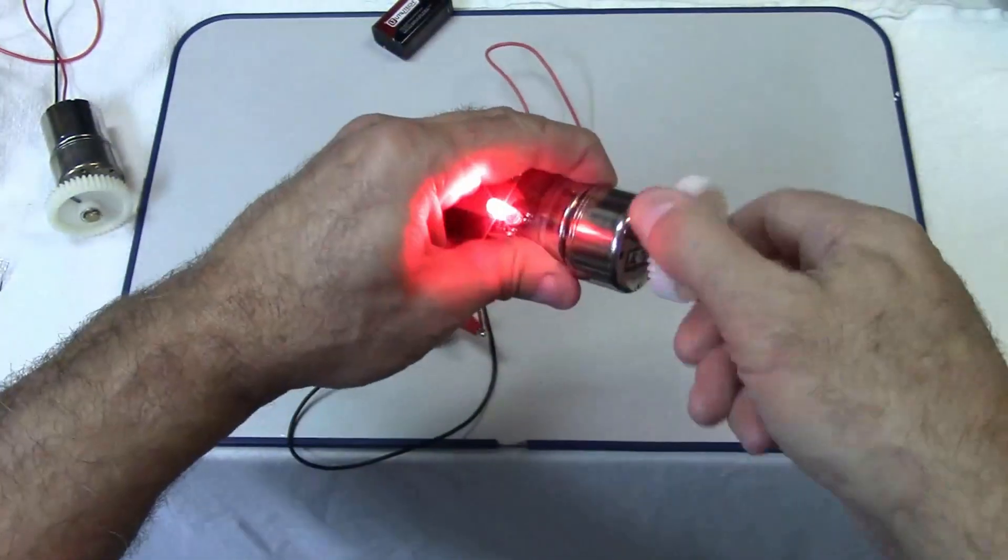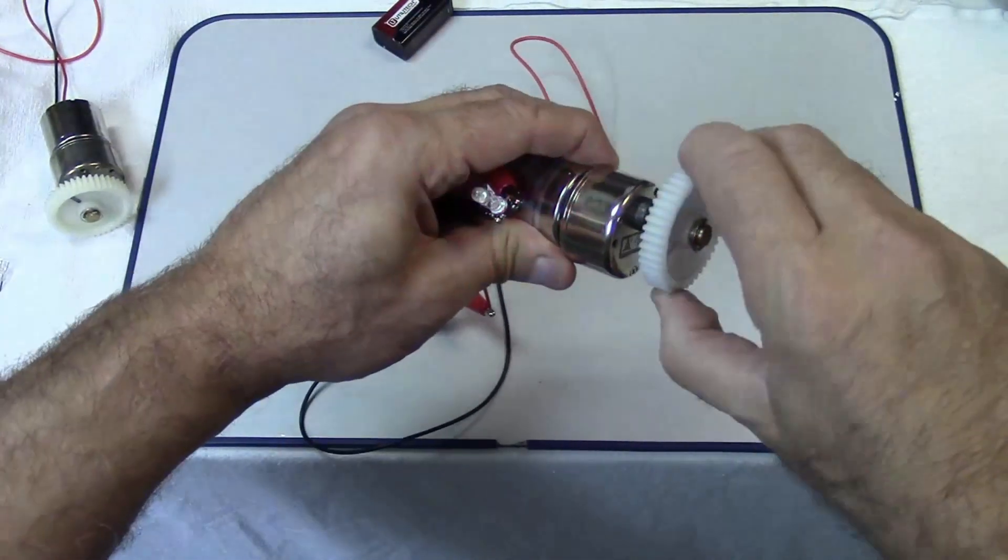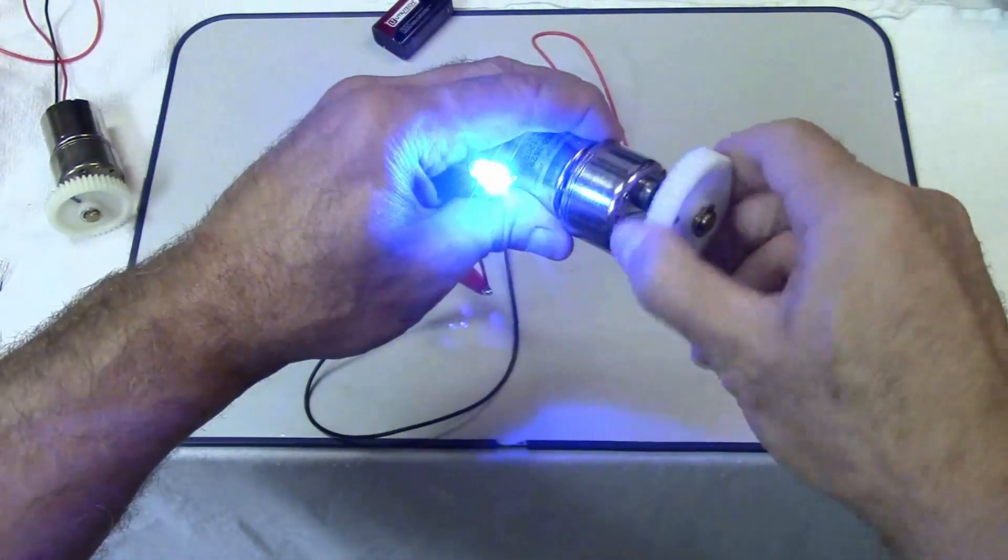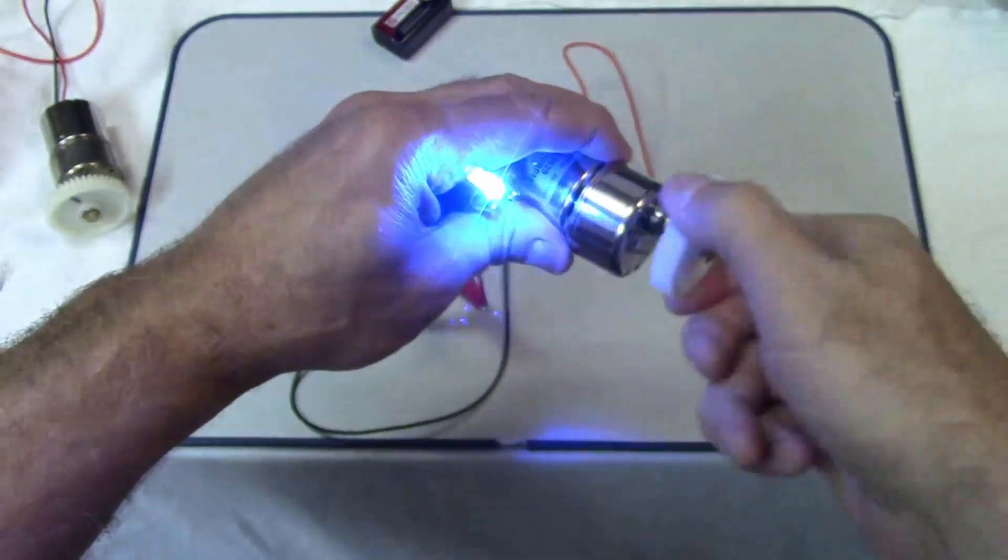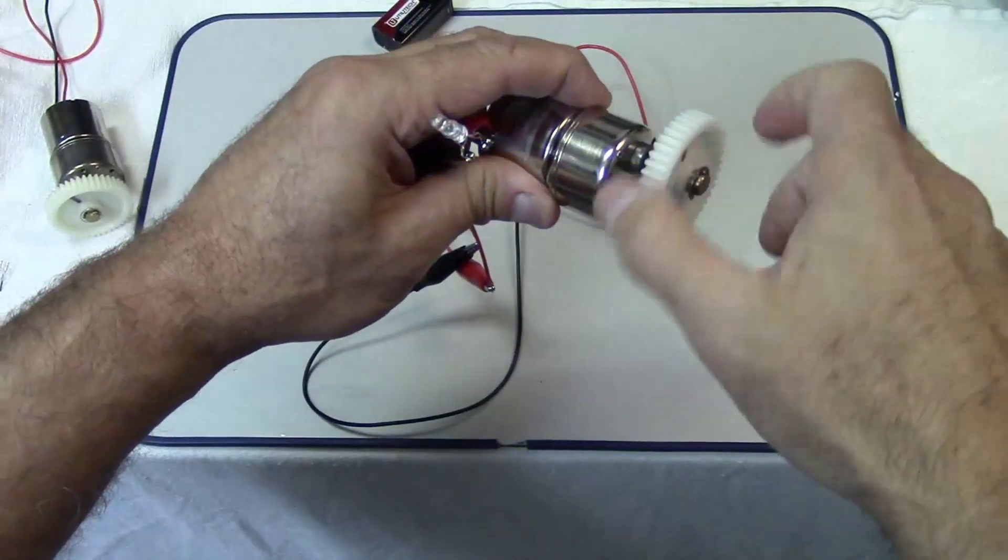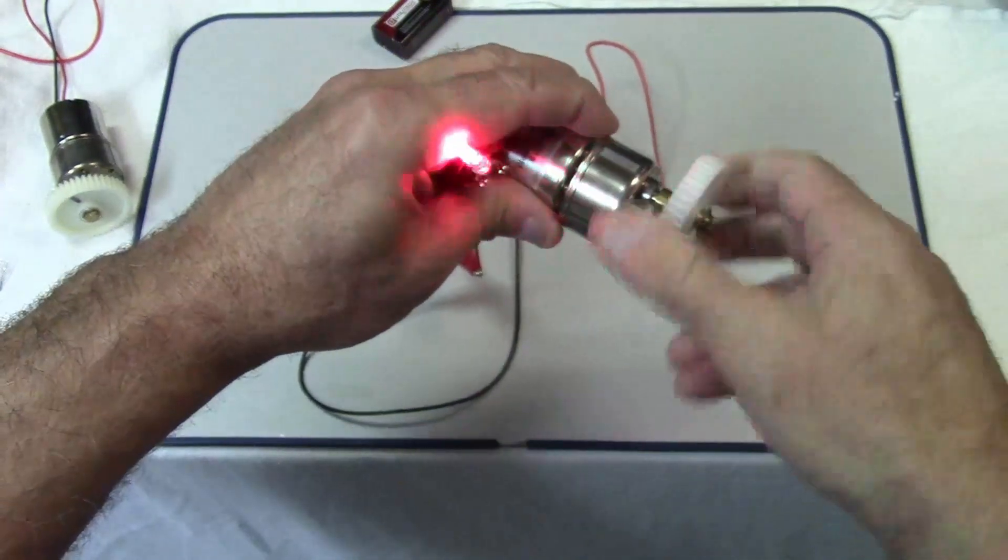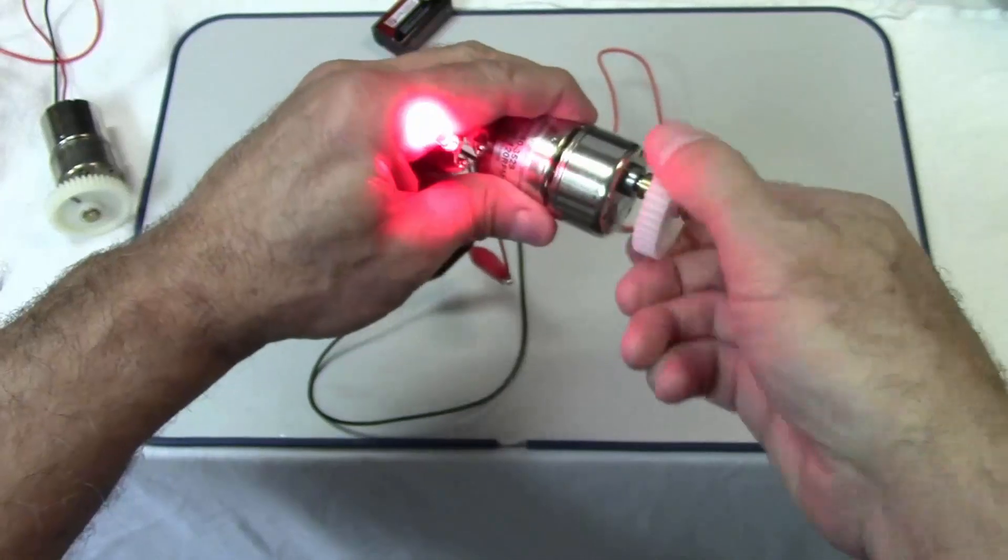There's our blue light again, and there's our red light when we go in reverse. So we're generating a voltage or current in one direction when we go clockwise. Blue is clockwise, red is counter-clockwise.